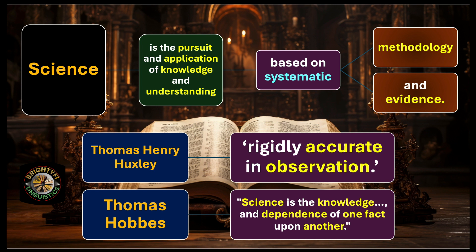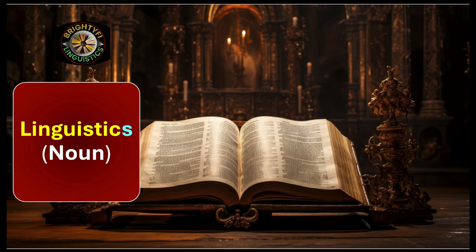Now we can see the difference between art and science. Art is related to your feelings, desires, and emotions, while science is related to facts, certain methodology, and evidence — we need to prove something in a concrete, objective manner. Now let's talk about linguistics. The word 'linguistics' is a noun and can be divided into two branches.